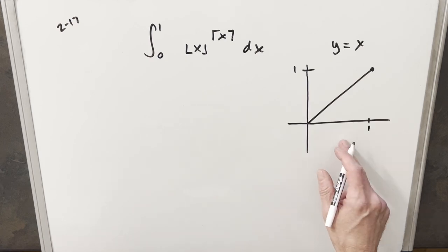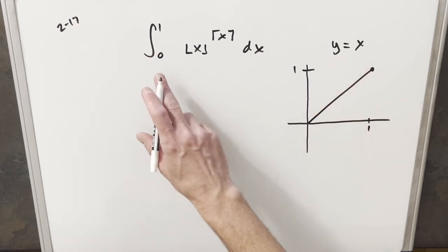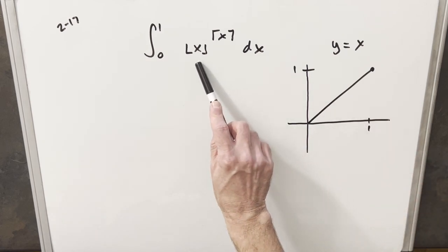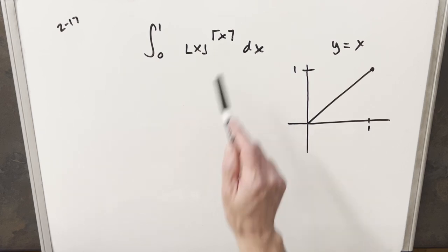We have a simple graph here to the right of y equals x, within our bounds from 0 to 1. We want to look at what's going to happen when we take the floor or the ceiling of this.